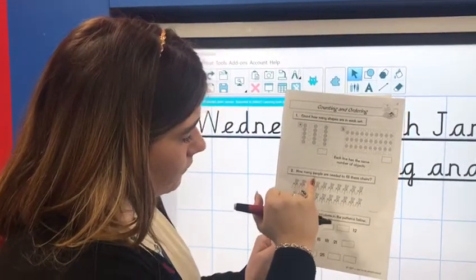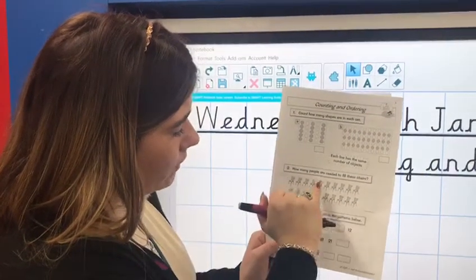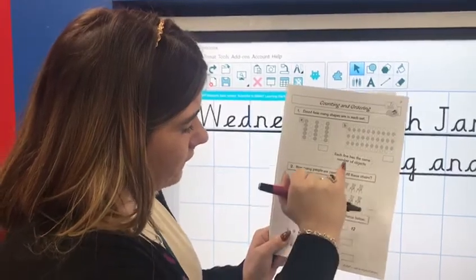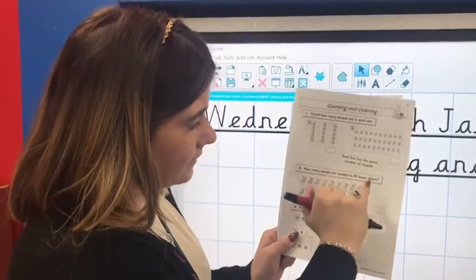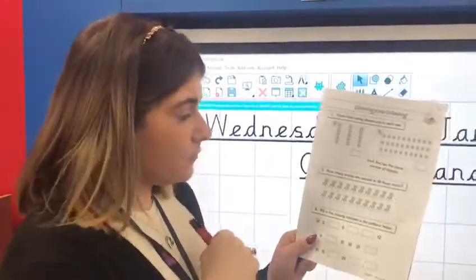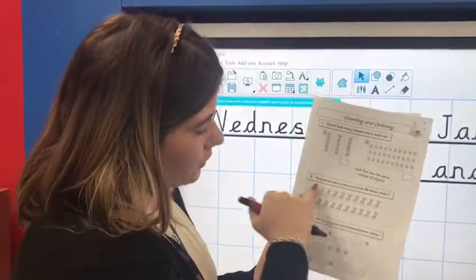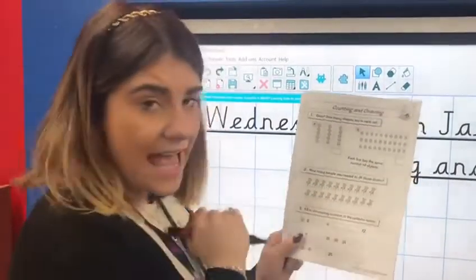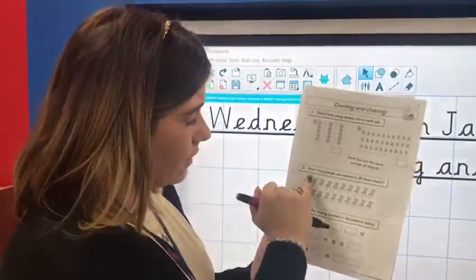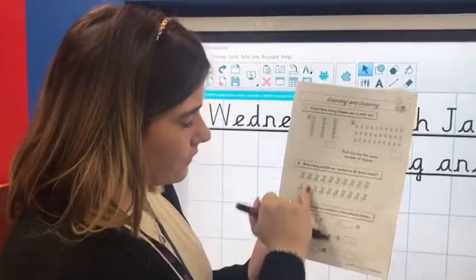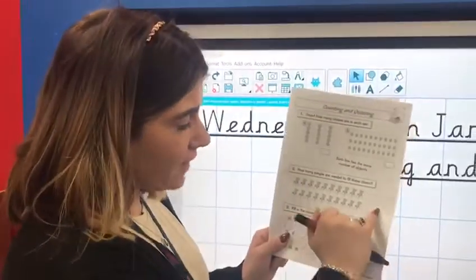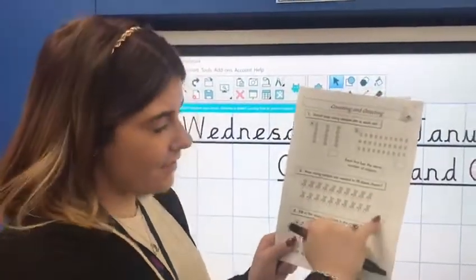1, 2, 3, 4, 5, 6, 7, 8, 9, 10. So with your pencil, I want you to either draw your rows of 10 to count how many you've got altogether, or your rows of 2, and then write your total here on the line.